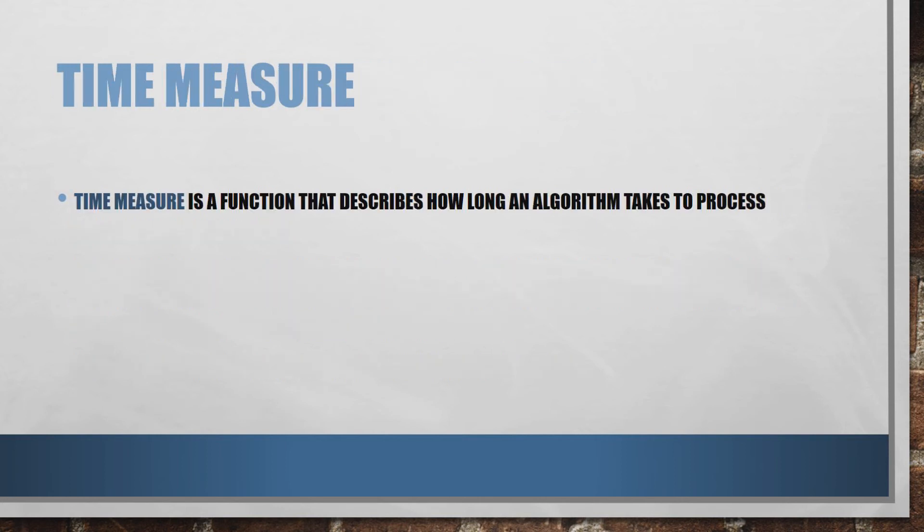And this is the key part of the efficiency of algorithms that might come up on your exam. At GCSE level, we're only really concerned with time measure. And time measure is a function that describes how long an algorithm takes to process. And by time, we don't necessarily mean the ticking of the second hand on a clock. Time can mean a number of different things.